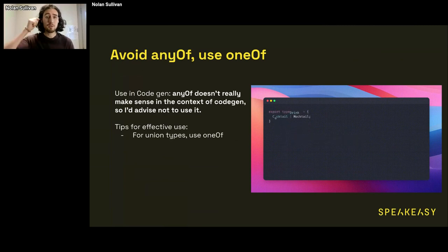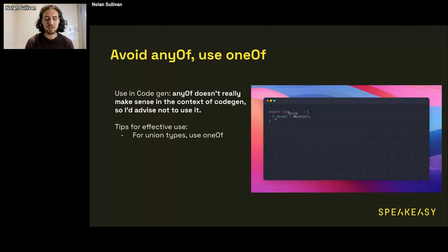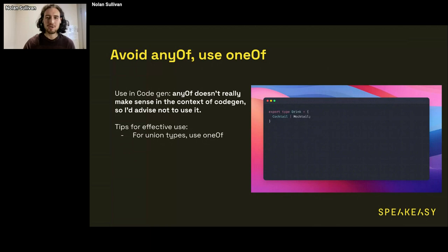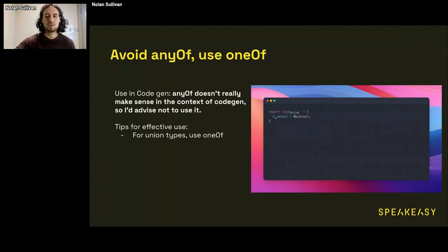In OpenAPI there are oneOf, anyOf, and allOf — just don't use anyOf. It doesn't really work well in code gen. The reason is that anyOf is saying it could be one or more of any of these things. In a code gen context, if you were to take that literally, you could have combinatoric generation of different object types for all the different mixes. Most code generators won't handle it. So just stick to oneOf — like if it's going to be A or B, use oneOf. That's the most widely supported of these terms in OpenAPI.